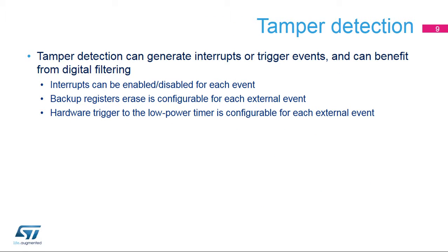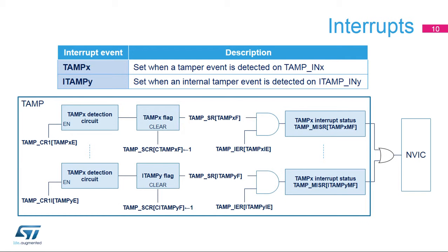The tamper detection circuitry can also be used to generate interrupts or trigger events. Each tamper interrupt can be individually enabled or disabled. Each external tamper event can be individually configured to erase the backup registers or not, and can also be individually configured to generate a hardware trigger to a low power timer. This takes advantage of the digital filtering present on these I/Os for interrupt or trigger generation. All interrupts can wake the processor up from all low power modes, and the detection on all tamper pins and internal tamper sources can generate an interrupt.